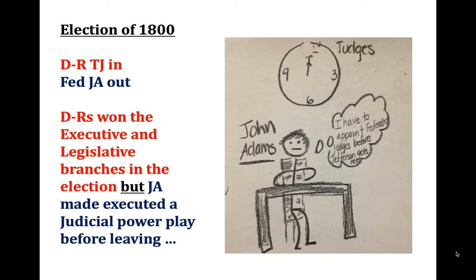Adams looks at this and thinks: our Federalists just got voted out of office — what do we do? How do we keep Federalism alive? His answer: fill up the judicial branch. One branch will be Federalist. And when you put a judge on the federal bench or the Supreme Court, they're there for life — an ingenious call. So right at the last second, John Adams creates a whole bunch of judicial positions, determined to keep Federalism alive forever.